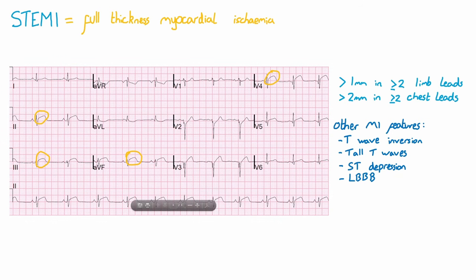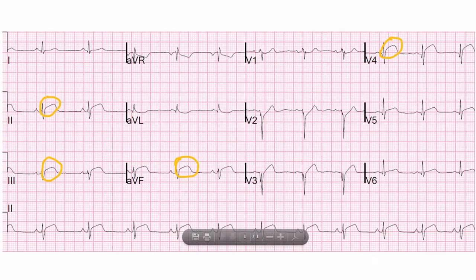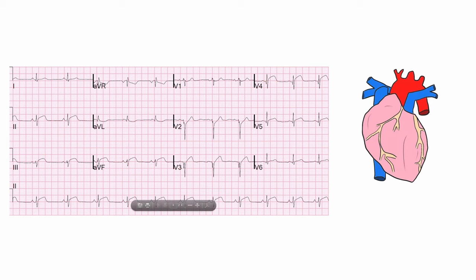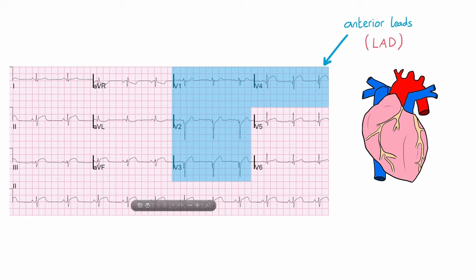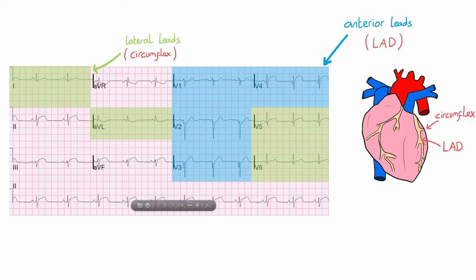An NSTEMI is a myocardial infarction without ST elevation, which may or may not contain some of these secondary features. T wave inversion can be normal in leads 3, aVR, and V1. However, notice in this ECG the T wave inversion in aVL. The location of the ST elevation can tell us where in the myocardium the ischemia is coming from, and therefore which coronary artery is likely affected. Leads V1 to V4 are anterior leads, usually supplied by the left anterior descending artery. Leads 1, AVL, V5, and V6 are lateral leads supplied by the circumflex coronary artery. And leads 2, 3, and AVF are inferior leads, representing the right coronary artery.